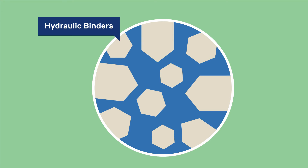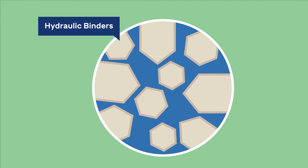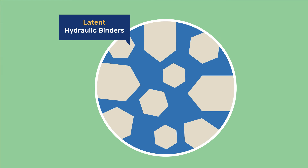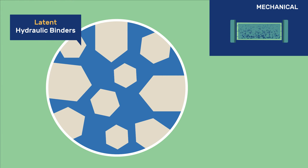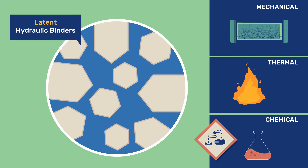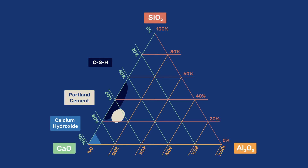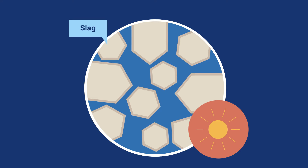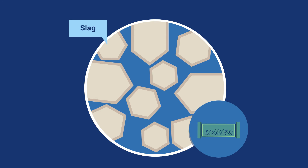Let us now consider hydraulic binders. These are mineral binders which, like cement, react alone with water and harden owing to the precipitation of hydrates. Latent hydraulic binders do much the same, but owing to lower reactivity, they require some form of activation — either mechanical through grinding, thermal through heating, or chemical by adding strong bases that attack glass phases contained in SCMs. As shown in the diagram, slag has a similar composition to cement with a relatively high calcium content, contributing to it reacting extensively provided it is well enough activated.